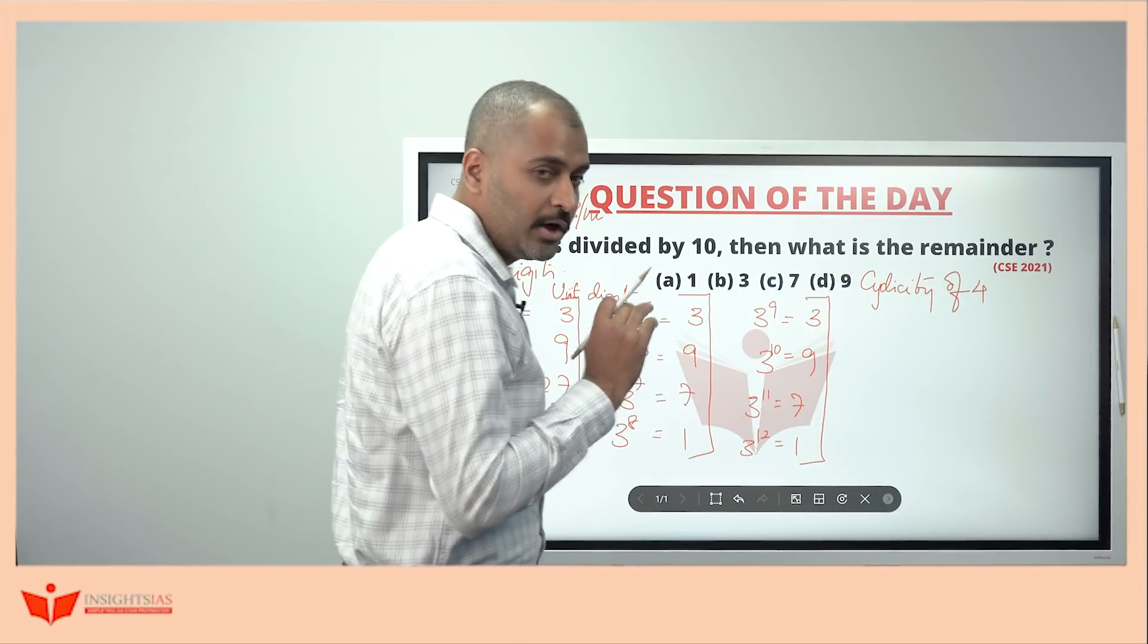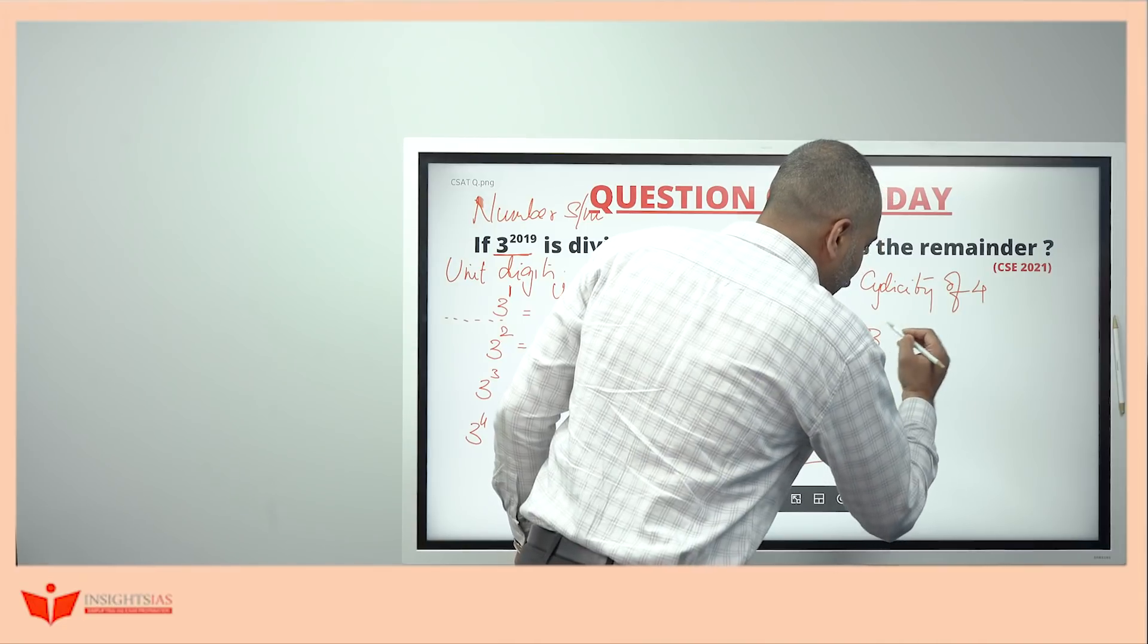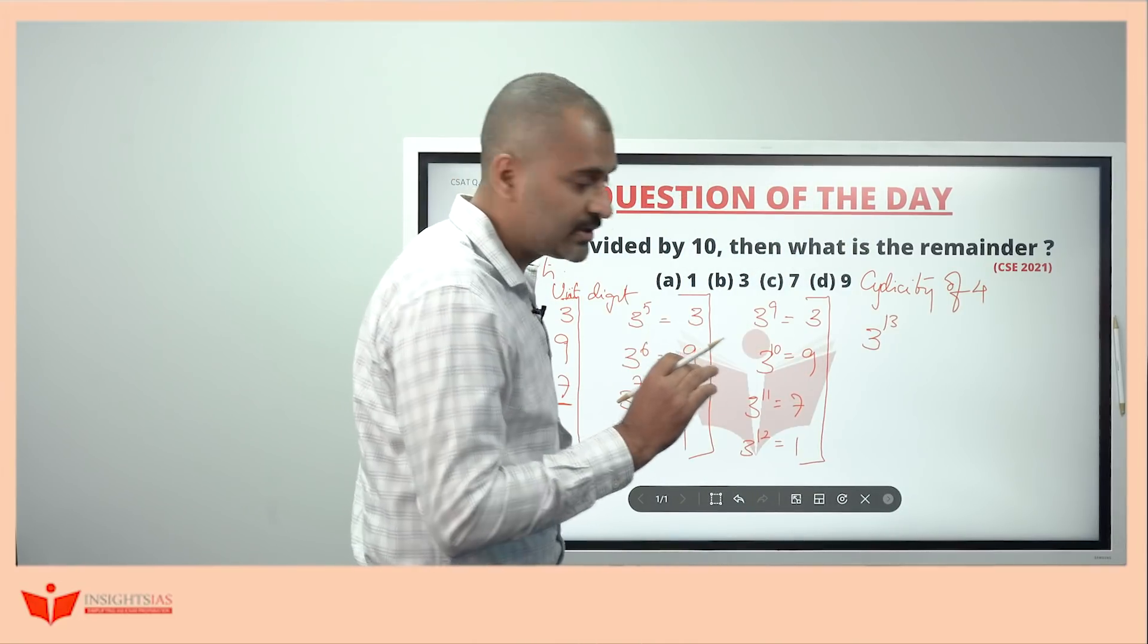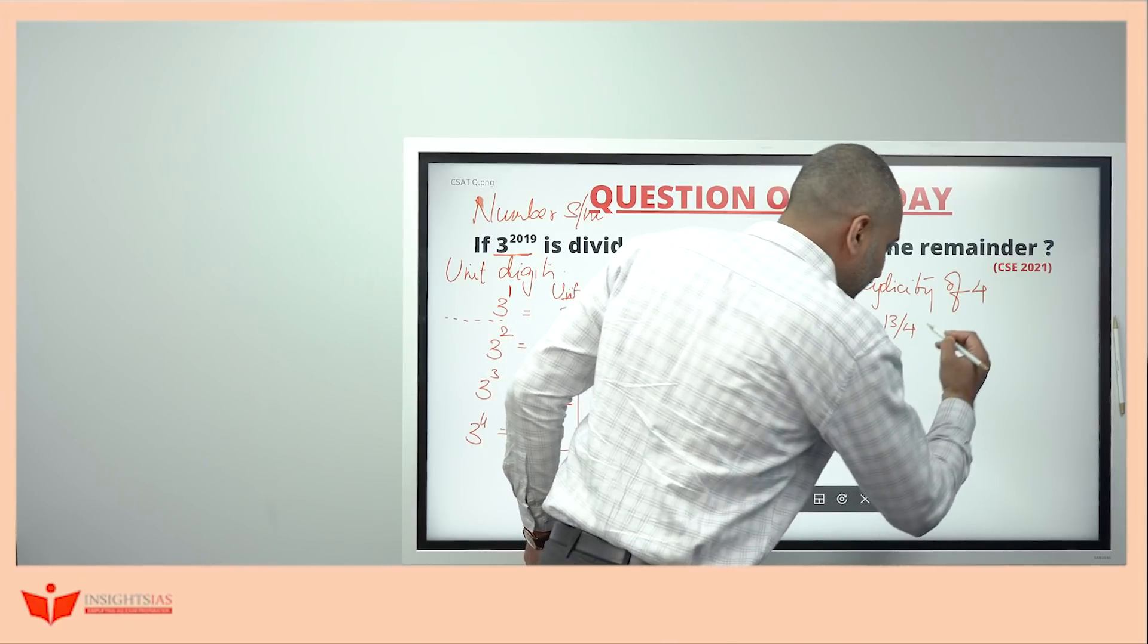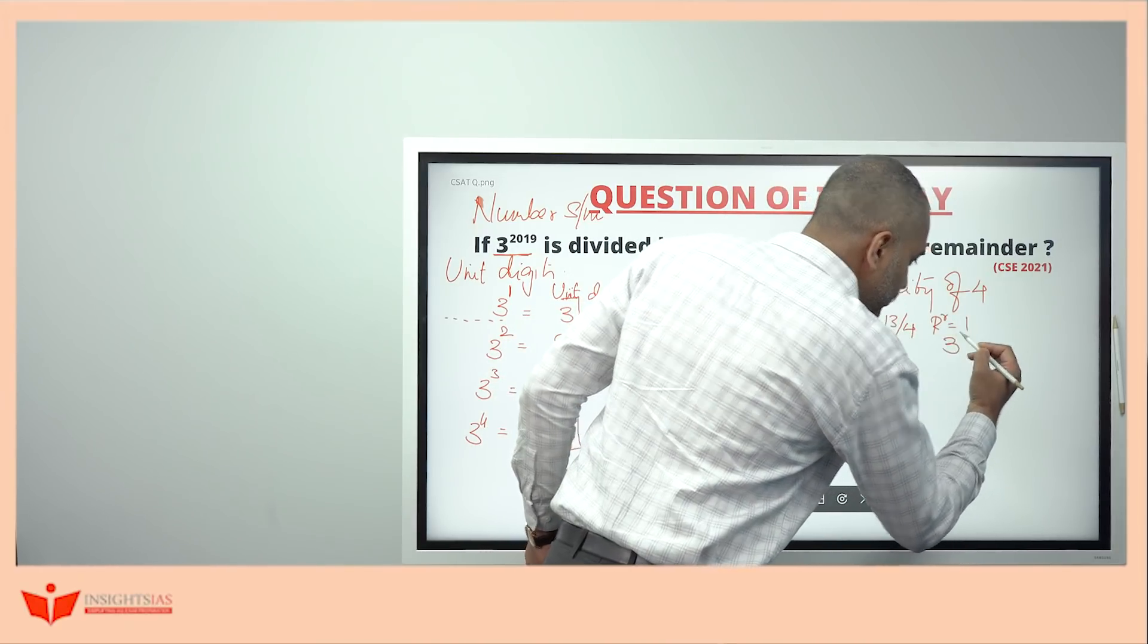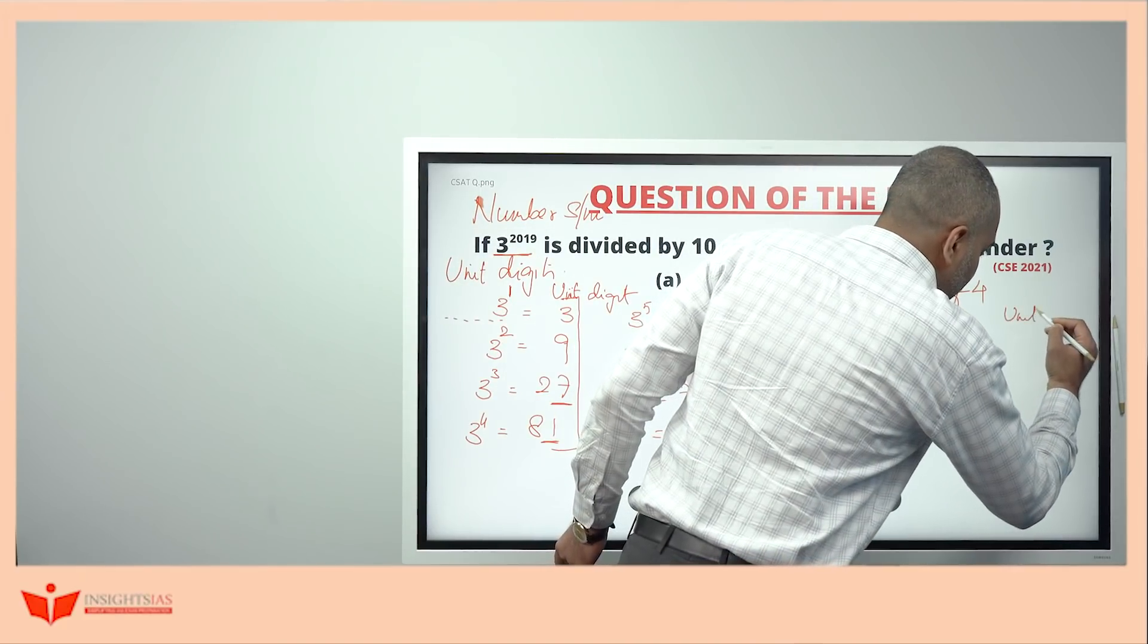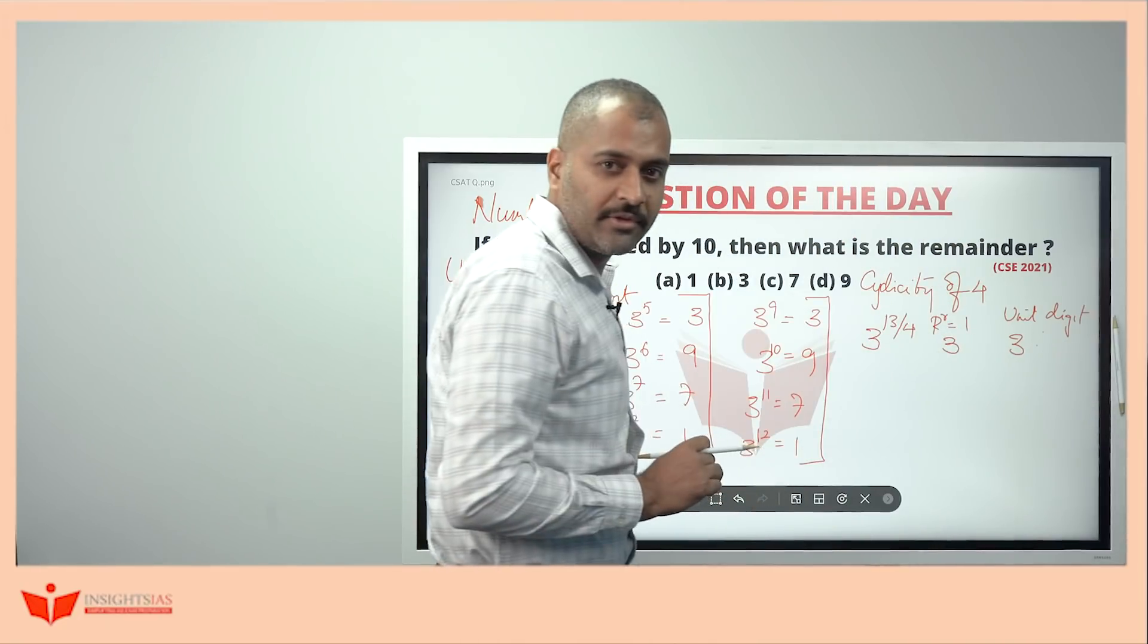So, cyclicity of 4. If I take 3 power 13, how to find unit digit in this case? Divide this by 4 and take the remainder. Remainder in this case is equal to 1. So, this is nothing but 3 power 1. Whenever 3 power 1, the unit digit is nothing but what? It is 3 itself.